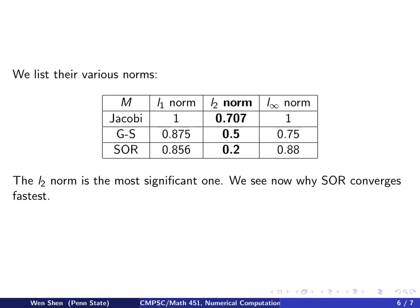Now, using these three matrices, we can compute their norms, various norms. Here we list in a table the three different norms: the L1, the L2, and the L infinity norm for those three matrices. And then we see that Jacobi matrix has a bigger norm, and Gauss-Seidel, SOR, they become smaller while not in the L infinity norm.